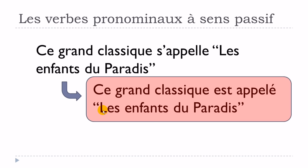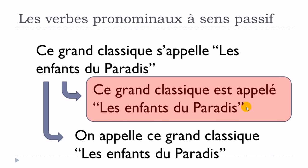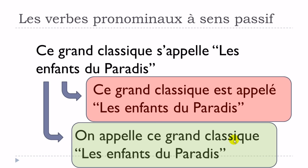Ce grand classique est appelé Les enfants du paradis — so that would be one option. Or it would be possible to use: On appelle ce grand classique Les enfants du paradis. You notice quite well that Ce grand classique is not doing the action. So s'appeler at the present form can be used instead of a passive form, which is quite useful. It's good to remember that it's an option you have instead of using le passif, in some cases — not all the time.